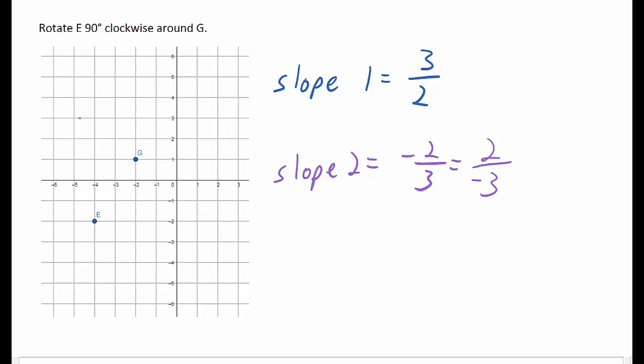Up 2, left 3. So when we rotate E 90 degrees clockwise around G, we end up at the point negative 5, 3.